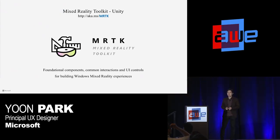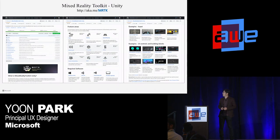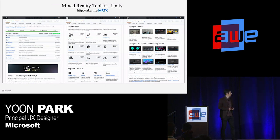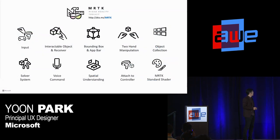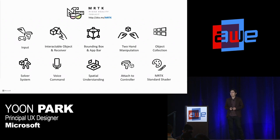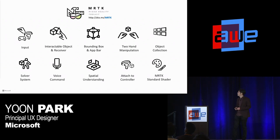Mixed Reality Toolkit is the open source project where you can find foundational building blocks, common interaction patterns, and UI controls. When you visit the Mixed Reality Toolkit Unity GitHub, on the landing page you can find some of the feature areas and important example scenes. For the past several months, we have been adding many useful building blocks to MRTK, so I picked up some of the most frequently used interaction patterns and UI controls. I want to do a quick intro and show you where you can find examples and how you can apply them to your projects.